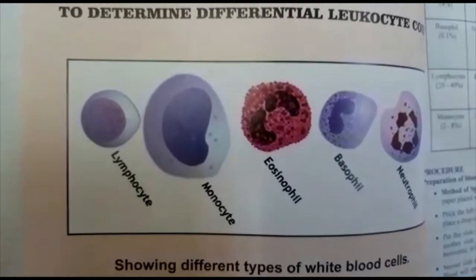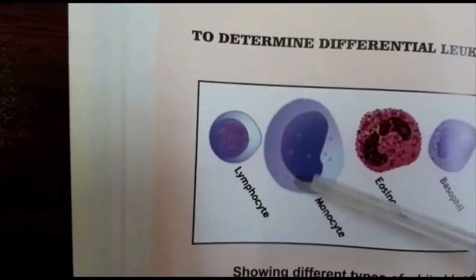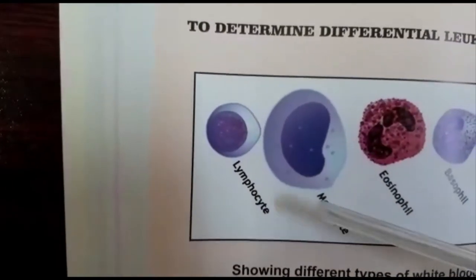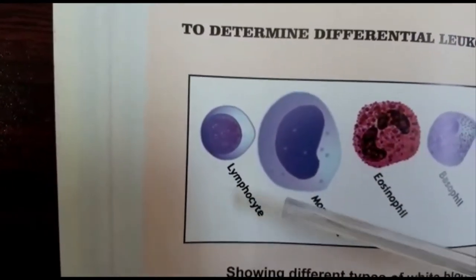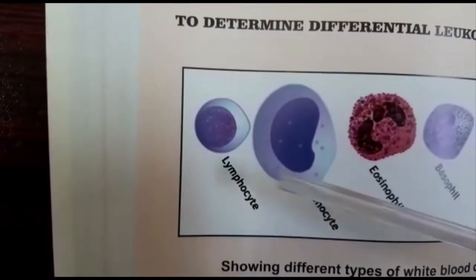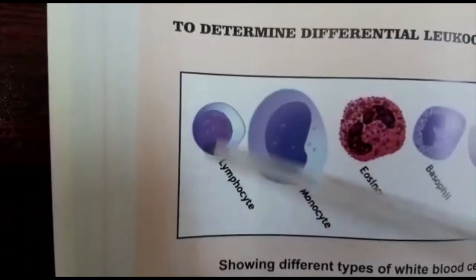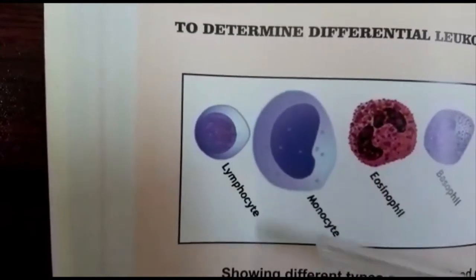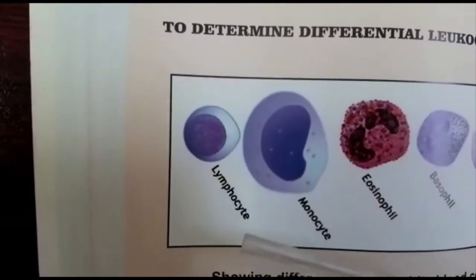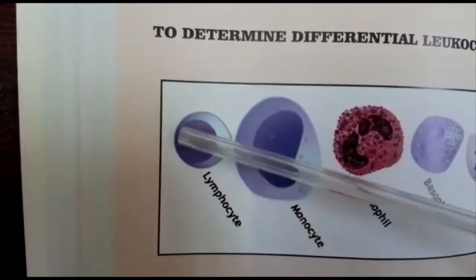Lymphocytes are 20–40% normally. They have a large rounded nucleus filling two-thirds of the cell, blue-purple in color. Granules are absent in the cytoplasm, which is pink in color.